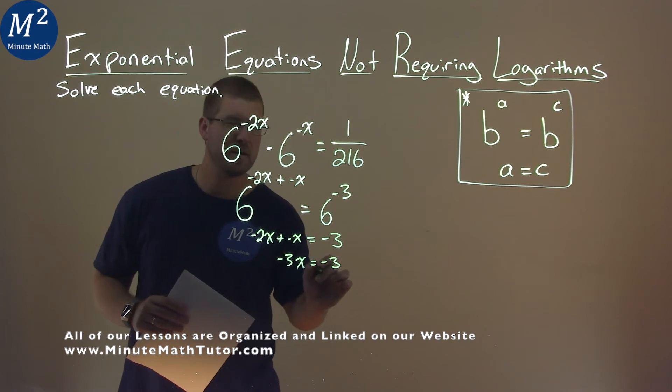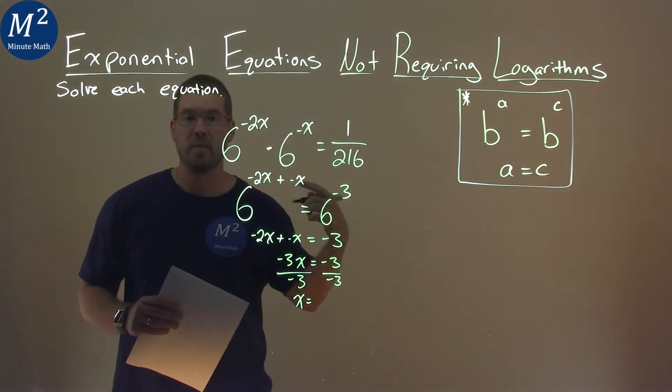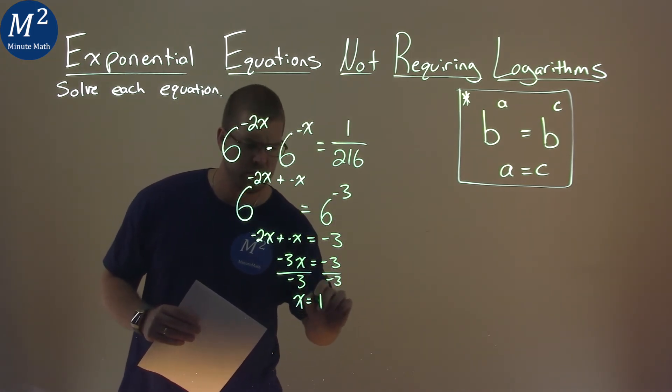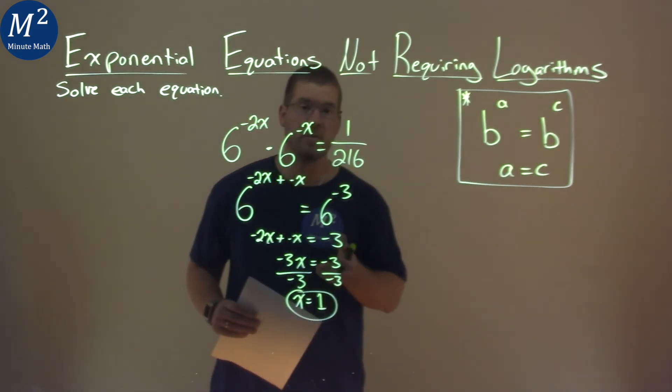Solving for x, divide both sides by a negative 3, and x equals negative 3 divided by a negative 3 is a positive 1, and so my final answer here is x equals a positive 1.